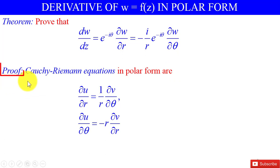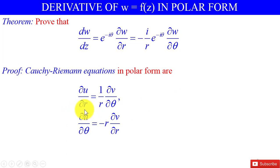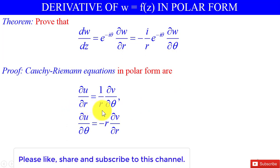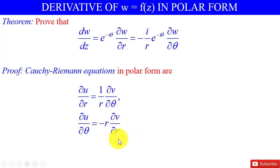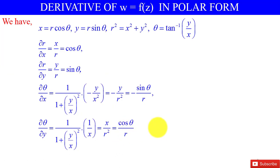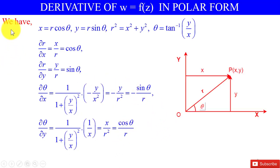Proof. The Cauchy-Riemann equations in polar form are: ∂u/∂r = (1/r) · ∂v/∂θ, and ∂u/∂θ = -r · ∂v/∂r.